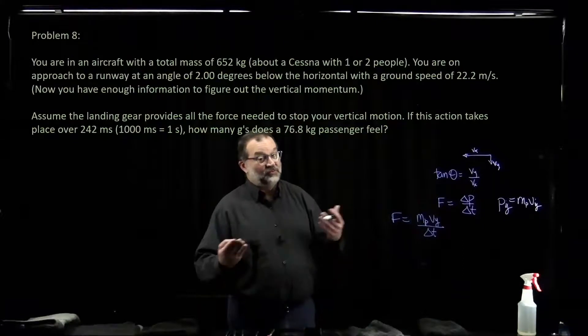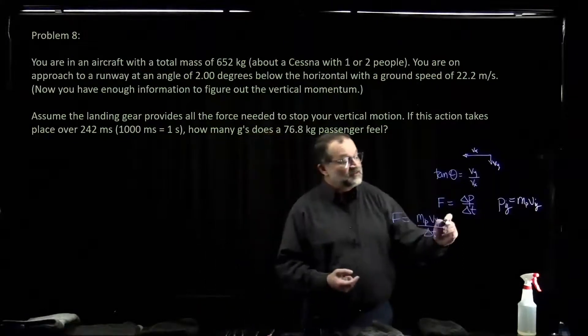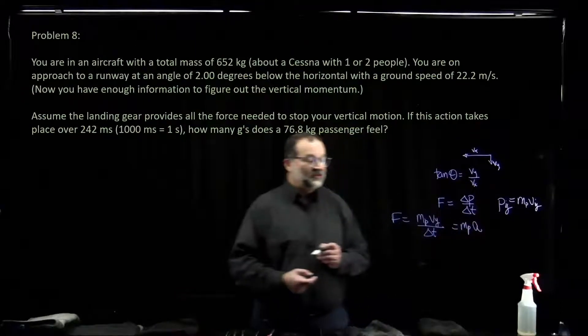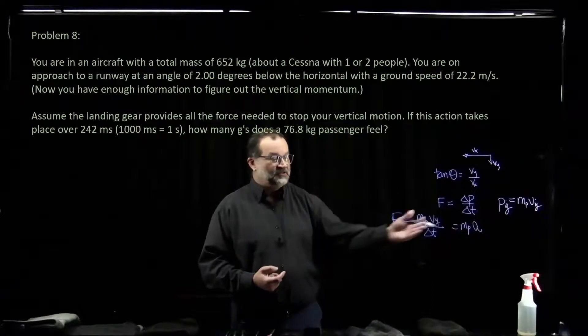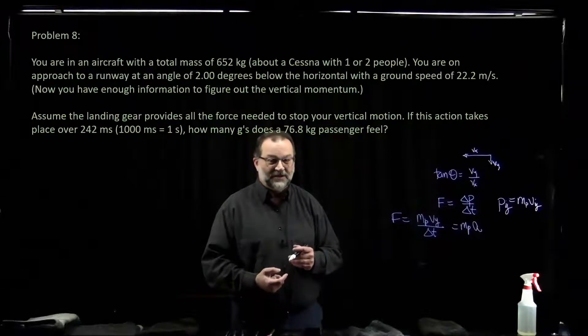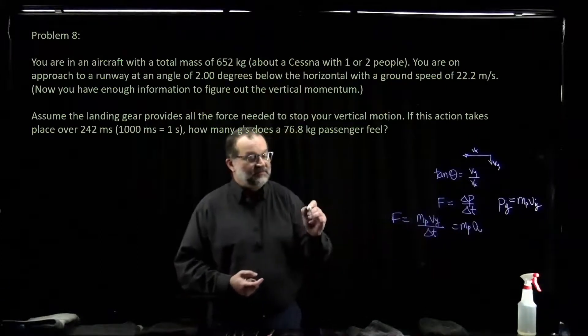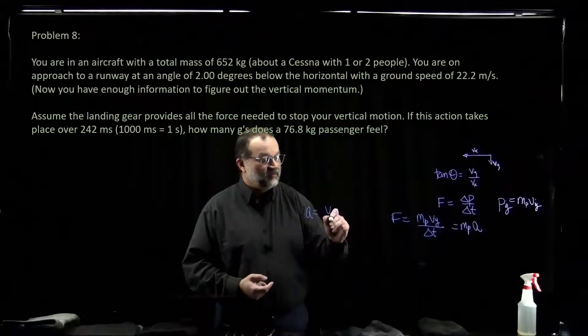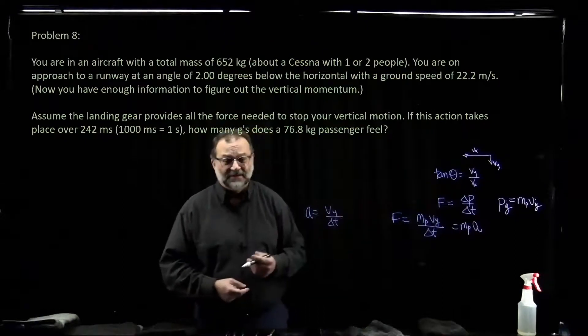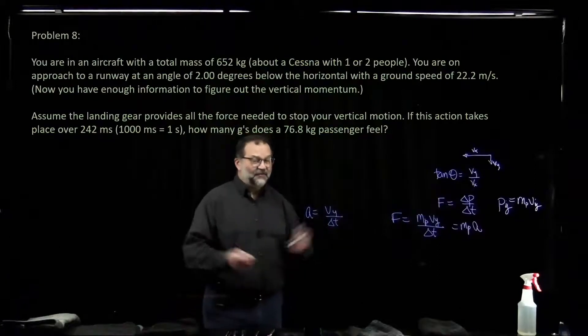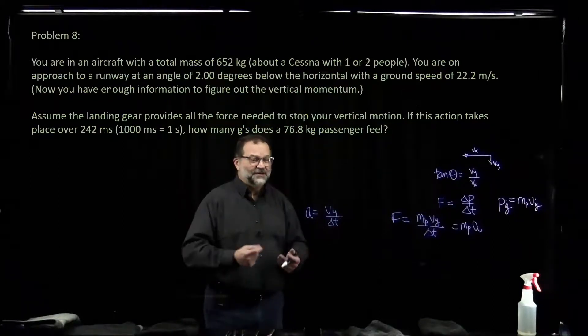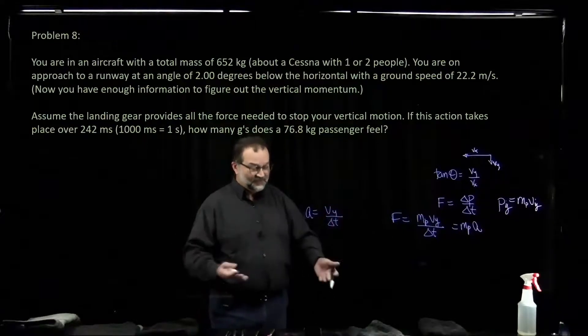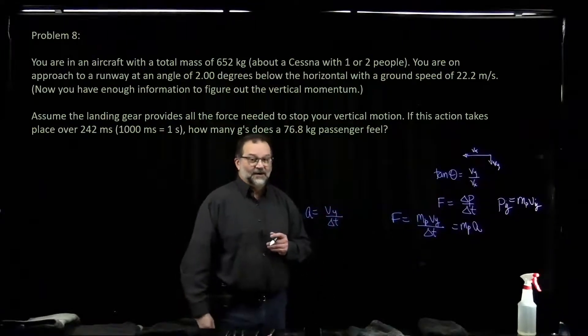Well, get back to Newton's second law. This is also the mass of the passenger times the acceleration of the passenger. You can see the mass cancels out here. And our acceleration of the passenger is vy over delta t, and the pilot as well. And everything in the aircraft and the aircraft, as long as they're all tied down and together, it's all the same.